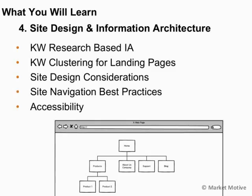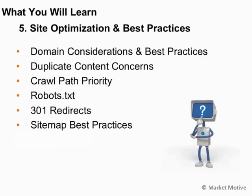With the newfound knowledge of our keyword research, we can organize our navigation and user path priority, making sure our site is accessible and designed effectively — clustering keywords for individual landing pages so we can track those landing pages and users coming through search engines. We'll also look at domain and site-wide best practices, like exact match domain versus partial match domain, duplicate content concerns, robots.txt blocking, 301 redirects, and sitemap best practices so bots and spiders crawl and index your site effectively.